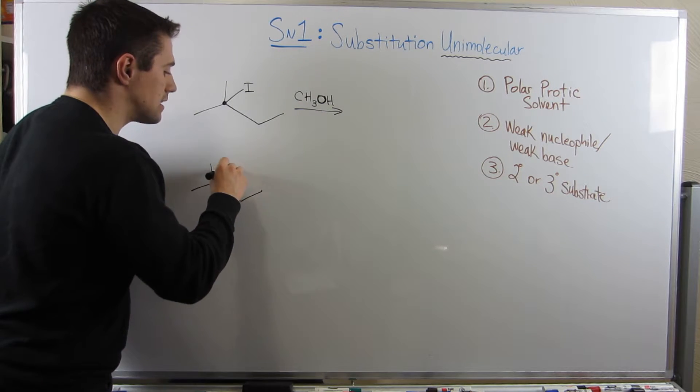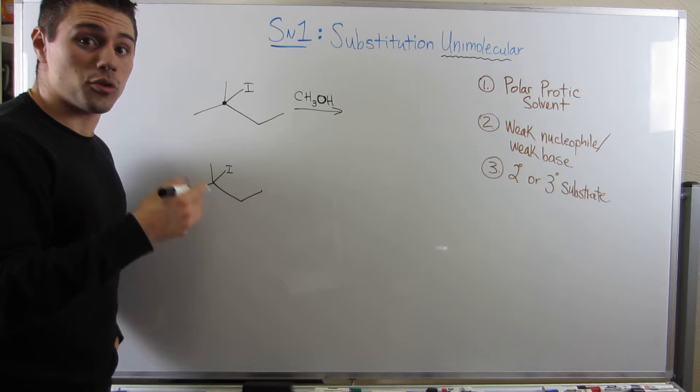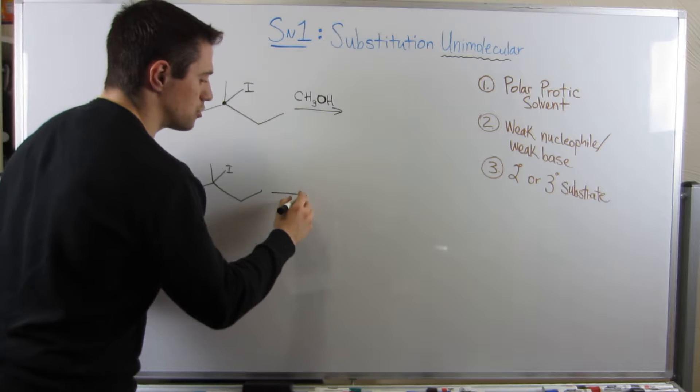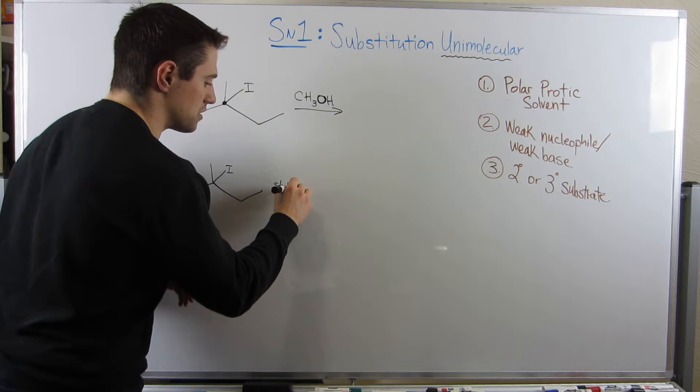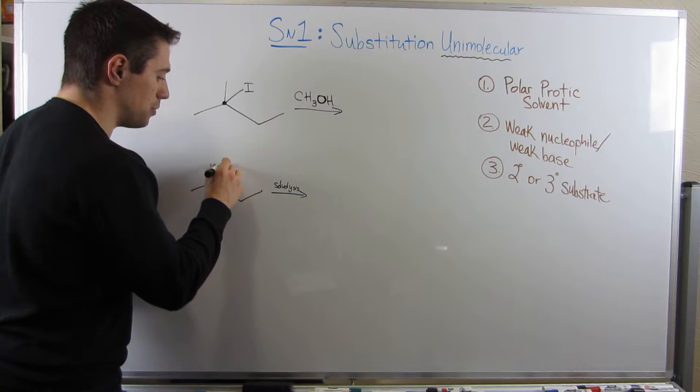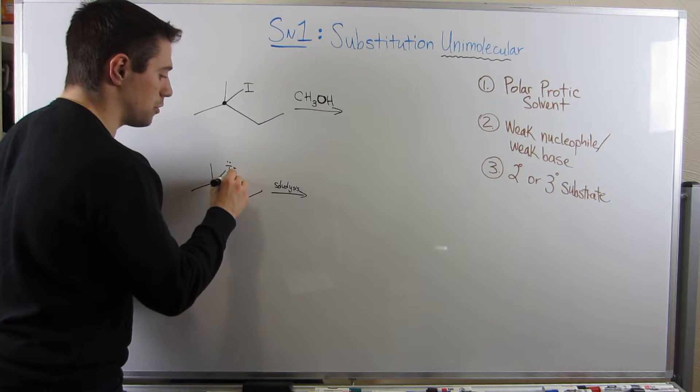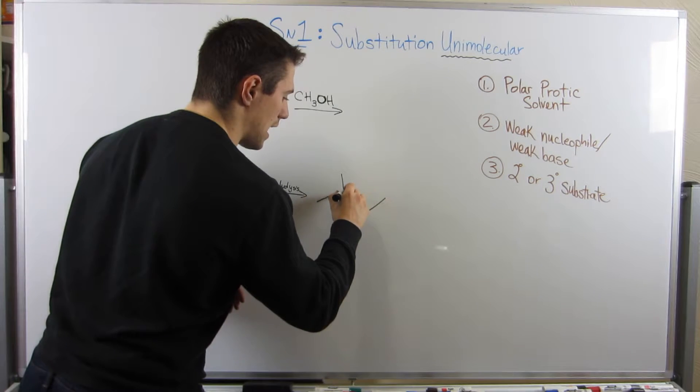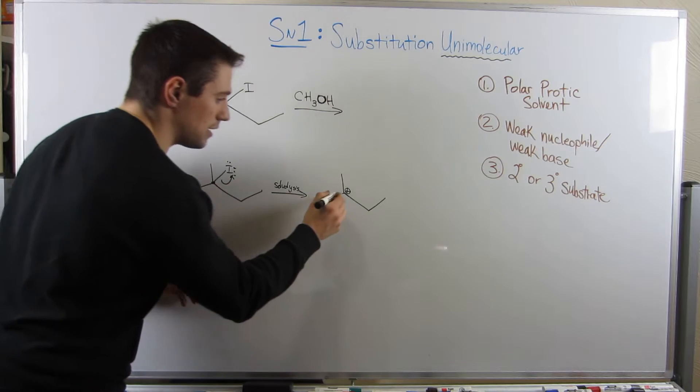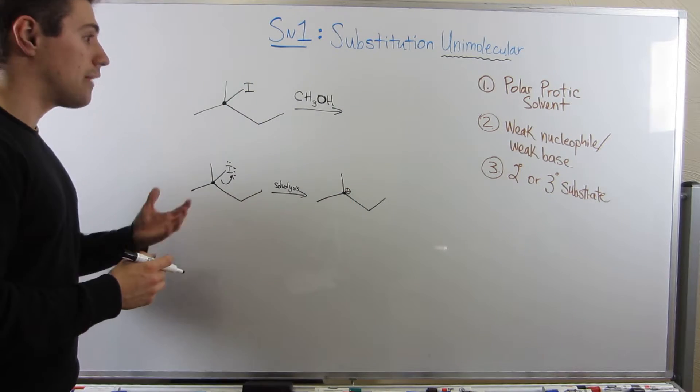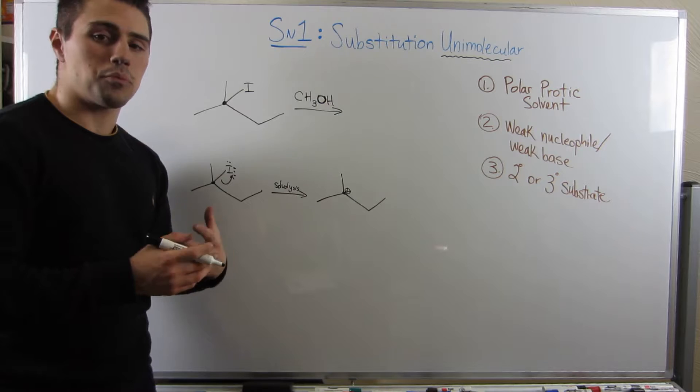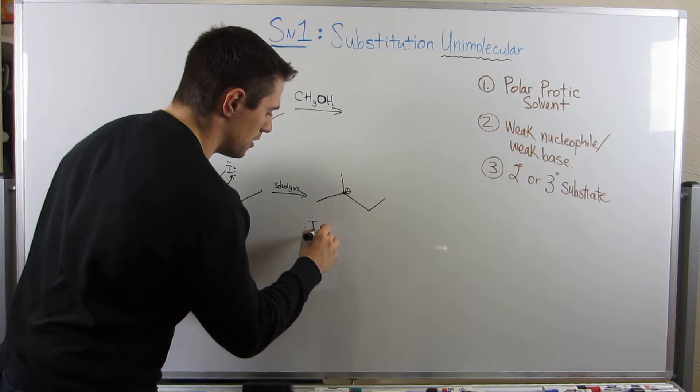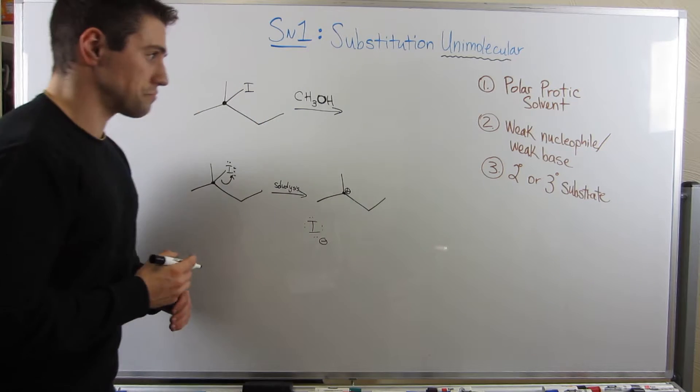So, first step is that iodine through solvolysis will leave. And you don't have to draw the solvent around the leaving group like I did. You can kind of just draw an arrow and write solvolysis. And then you can just show your leaving group leaving, doing what it does best. And that means this dot carbon right here is our carbocation. And that's good, because he's tertiary. He's a relatively stable carbocation. And I can draw our I- that we kicked off down here, but we won't really need him.